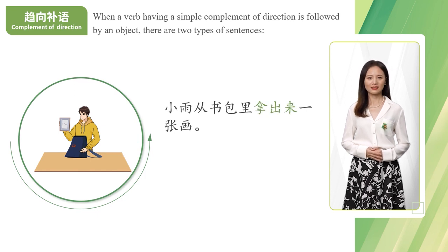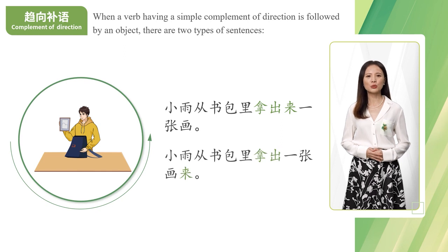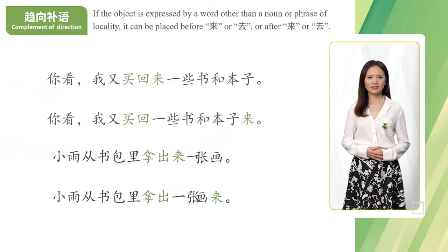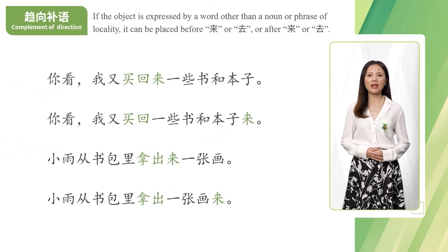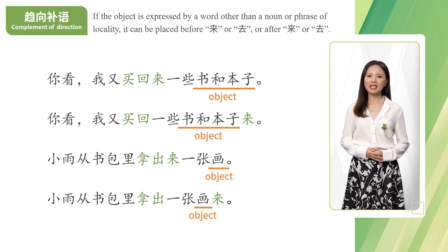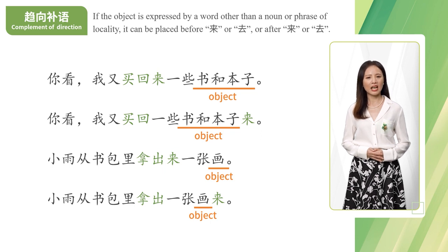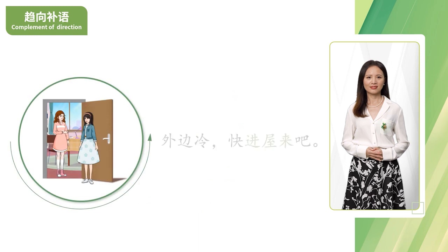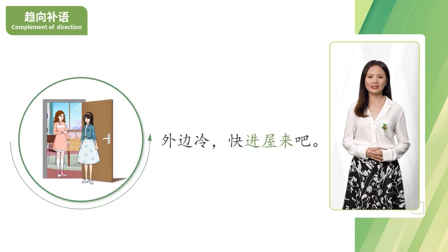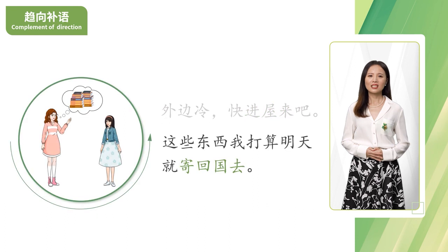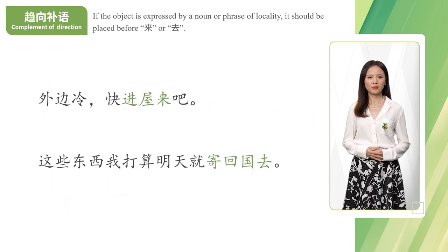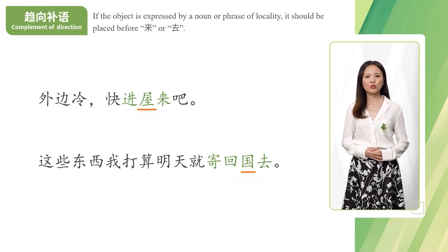小雨从书包里拿出来一张画。小雨从书包里拿出一张画来。If the object is expressed by a word other than a noun or phrase of locality, it can be placed before 来 or 去, or after 来 or 去. 外边冷，快进屋来吧。这些东西我打算明天就寄回国去。If the object is expressed by a noun or phrase of locality, it should be placed before 来 or 去.